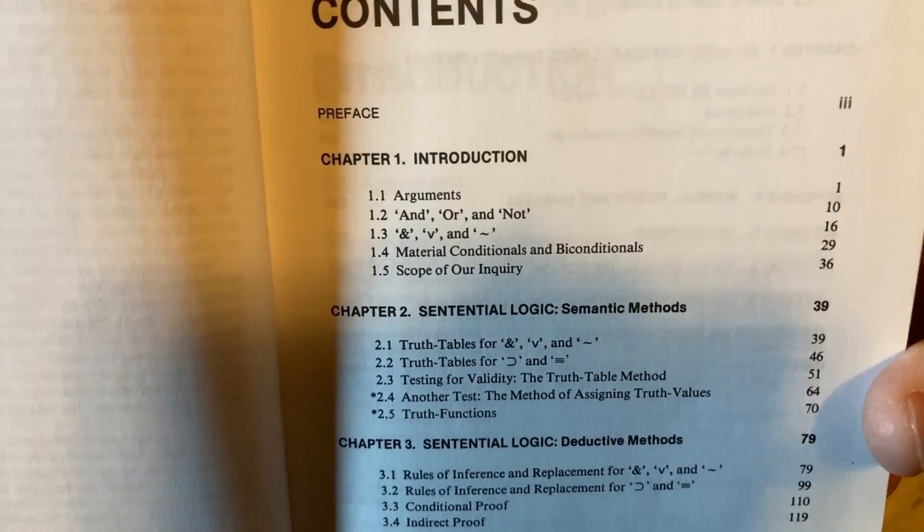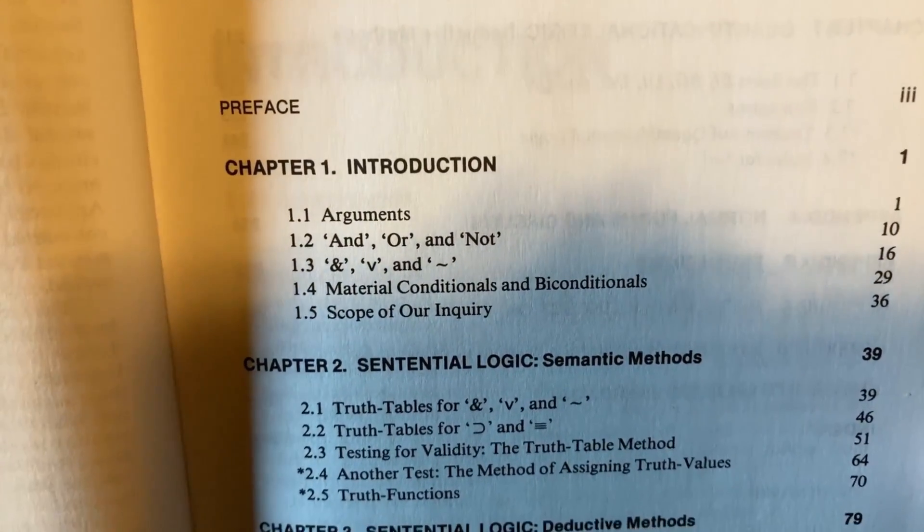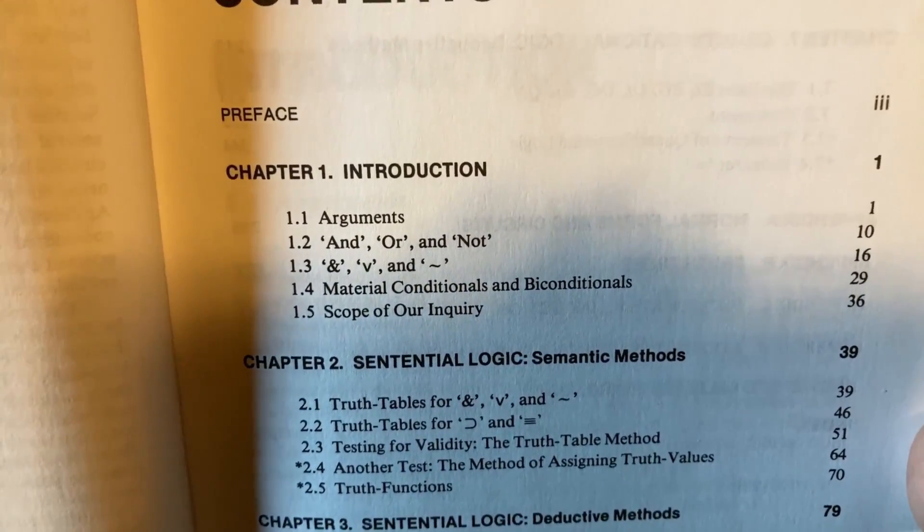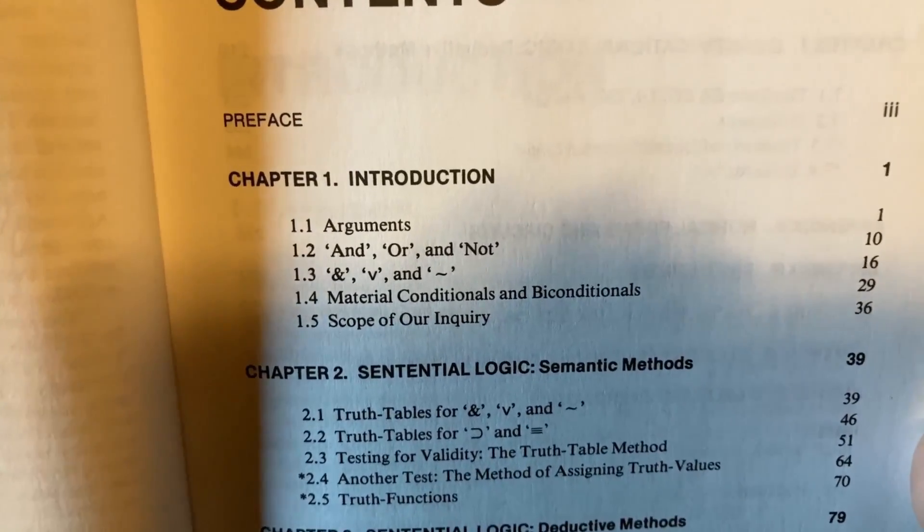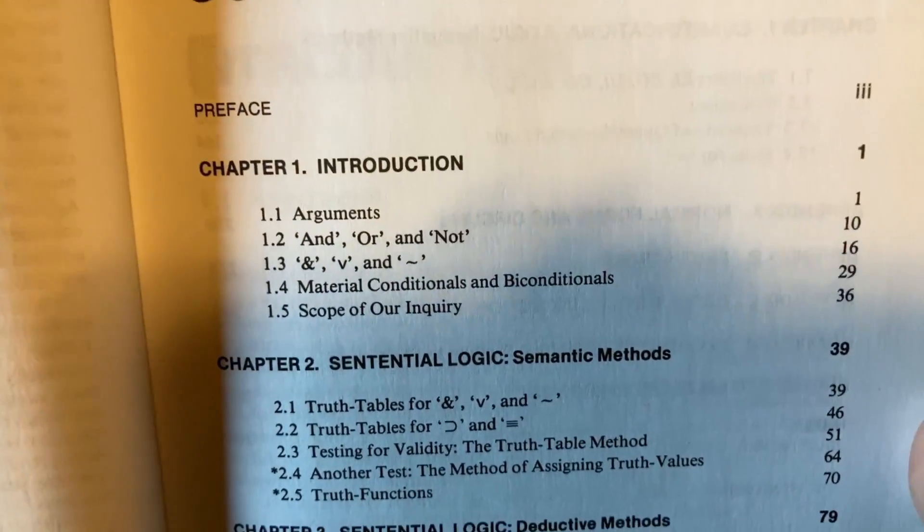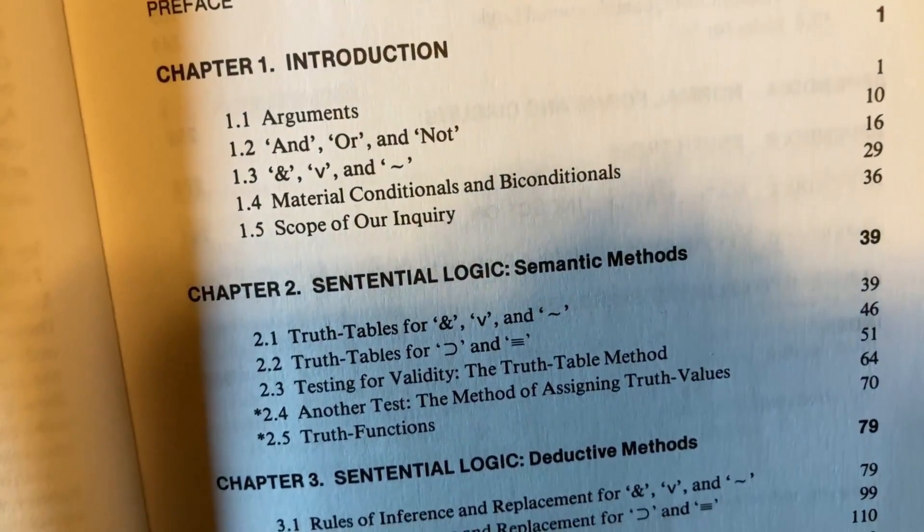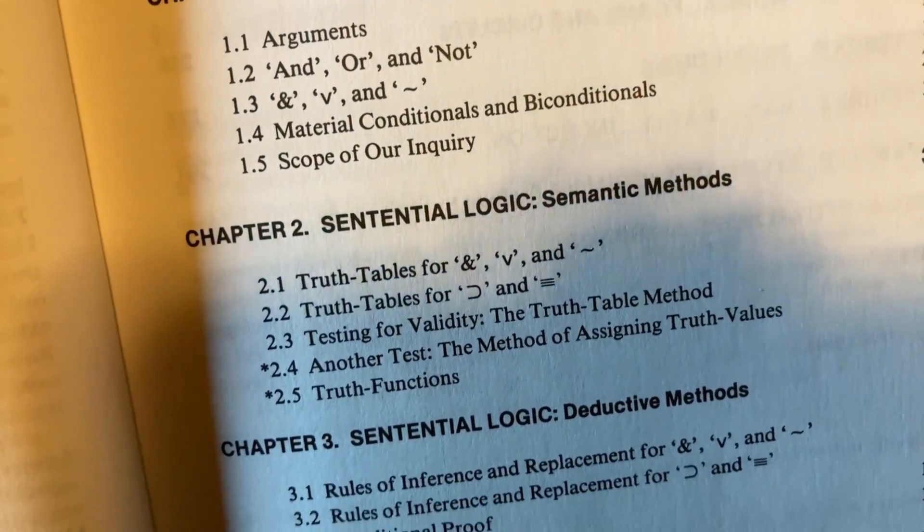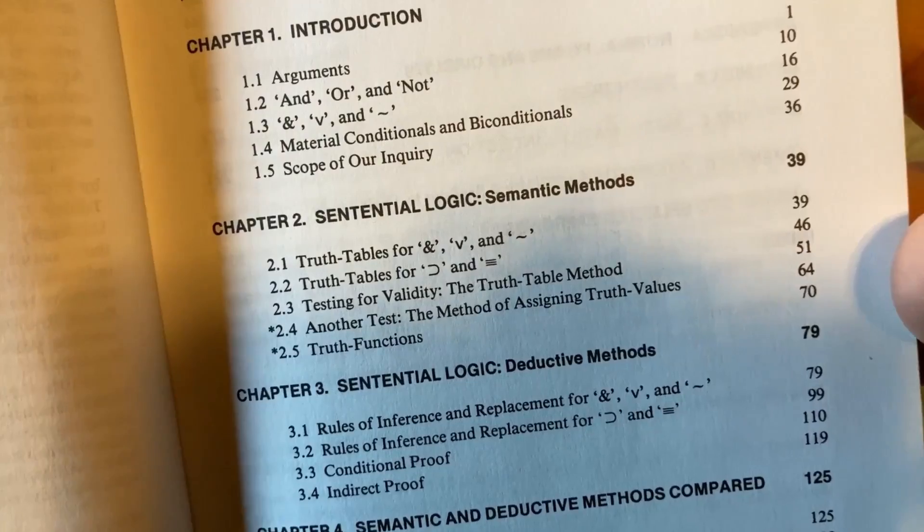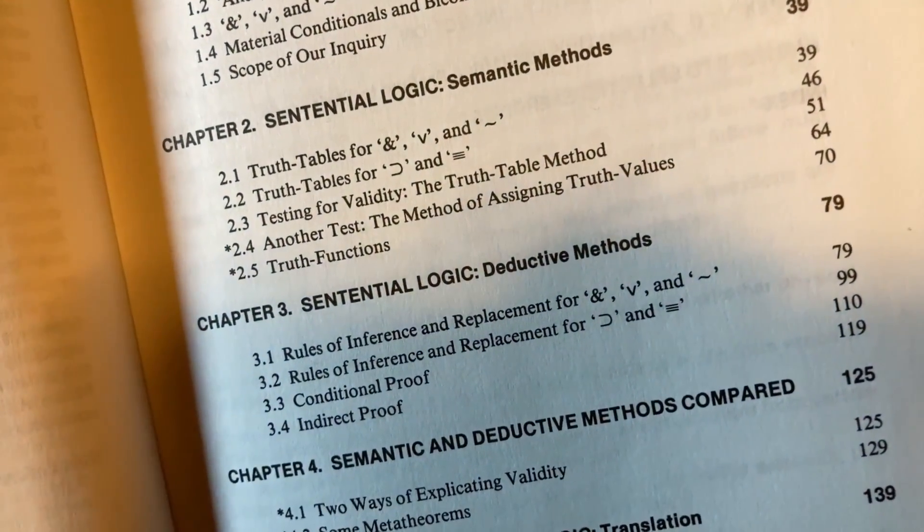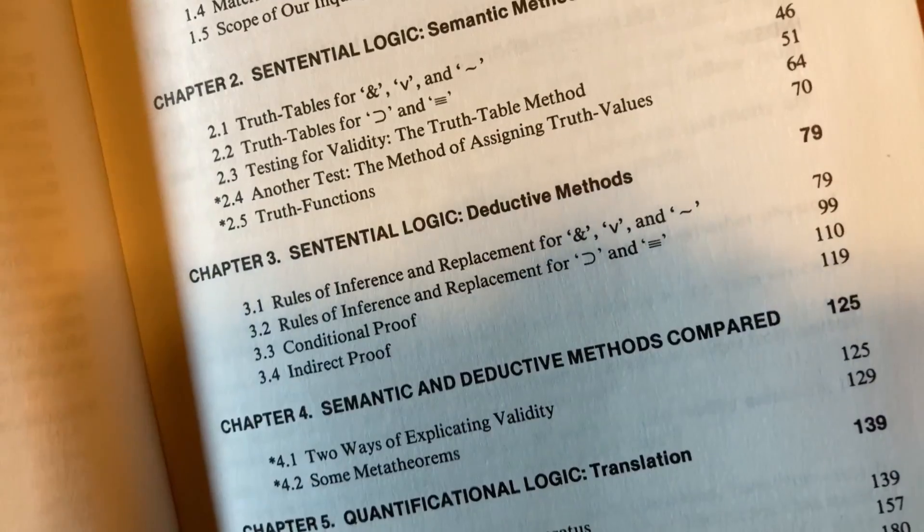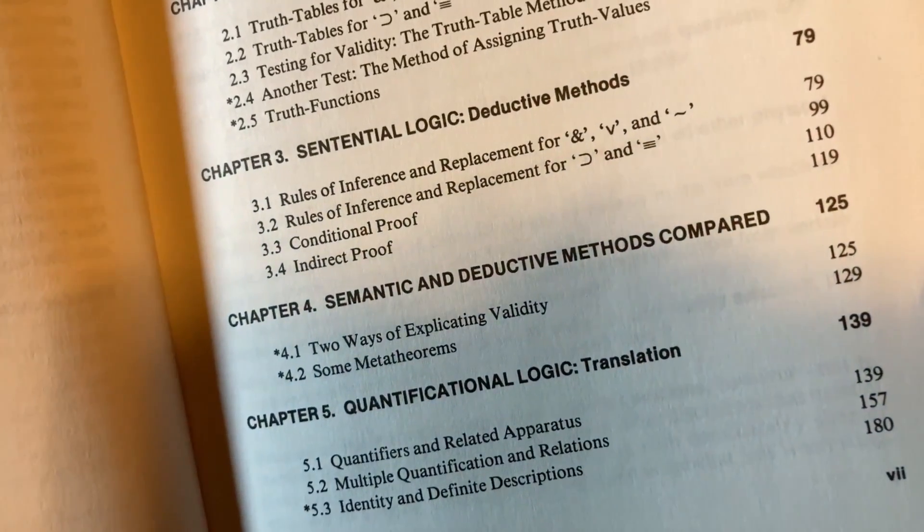So here's the contents. Let's take a careful look at this. So chapter one is an introduction. This is really important stuff that you should definitely want to learn and understand if you want to get to the point where you can write proofs and understand them. So arguments and, or, and not. And then sentential logic, semantic methods. I hope I said that correctly. Truth tables, deductive methods, and then some comparisons, quantificational logic.